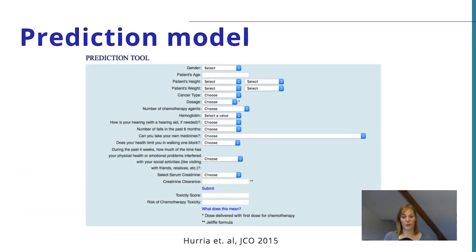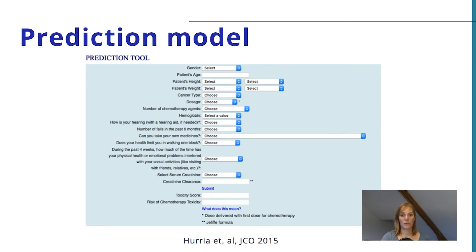Here is an example of a prediction model from the field I work in — Geriatric Oncology. This is a prediction model that aims to predict the risk of treatment toxicity from chemotherapy in older adults with cancer. As you can see, you can enter a lot of different variables which are the predictors — for example the age of a patient, the type of cancer, but also geriatric variables like how fit a patient is and what problems he or she has. If you enter all these factors, the model gives you a risk estimate of how high the risk of severe toxicity from chemotherapy is.